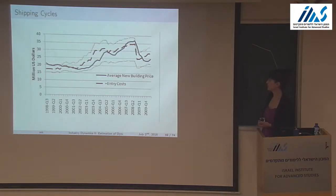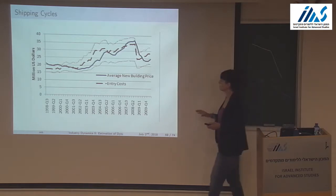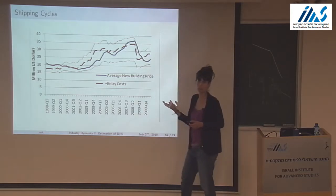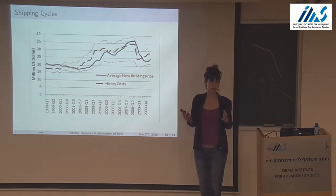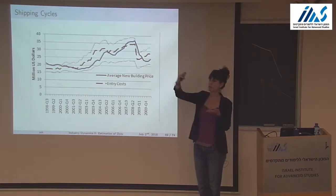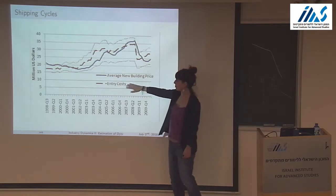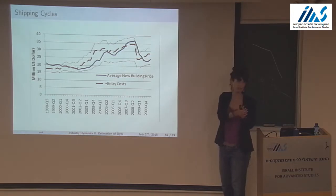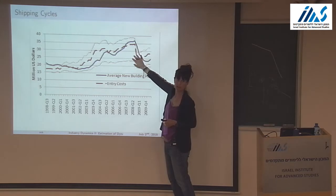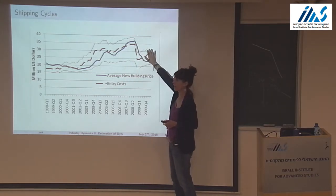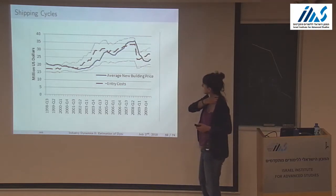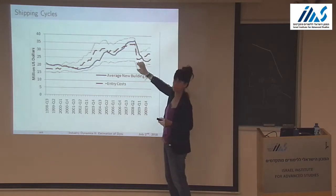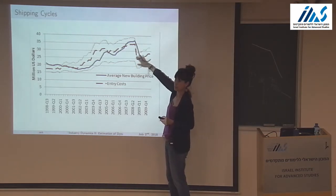The last part is the entry cost, which goes back to why the assumptions on the resale market might not be unreasonable. Entry costs are computed from the free entry condition — they equal the value of entering the market, which is the t-period ahead expectation of the value of a ship that's zero years old. This is noisy because it uses the youngest ship's value function with fewer observations, but comparing it to the price of a new ship, the two track fairly well, suggesting no severe sample selection bias in resale prices.